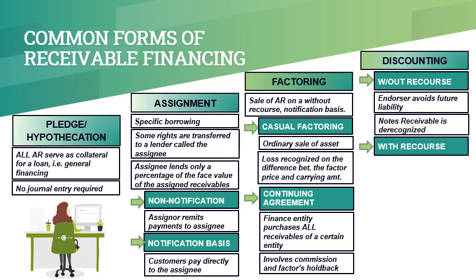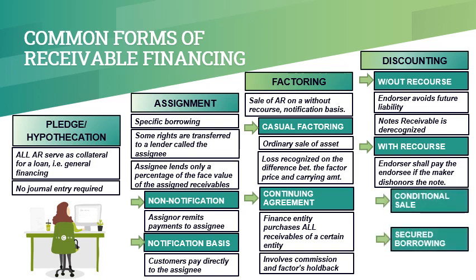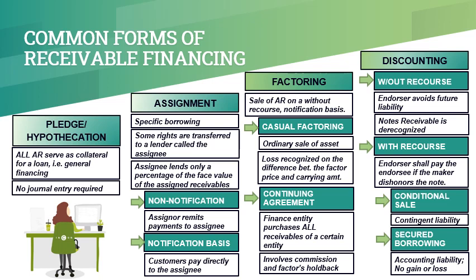An endorsement with recourse makes the endorser liable to the bank if the note is dishonored. An endorsement with recourse can be accounted for either as conditional sale or secured borrowing. A conditional sale involves recognizing a loss and a contingent liability — note receivable discounted. A secured borrowing involves recognizing an accounting liability — liability for note receivable discounted. A secured borrowing recognizes interest expense instead of a loss.